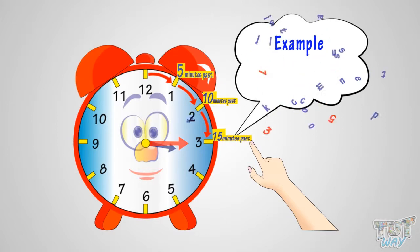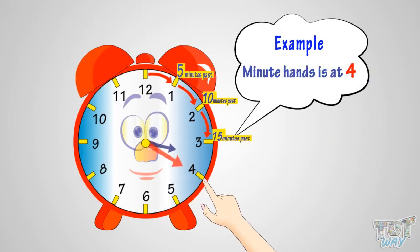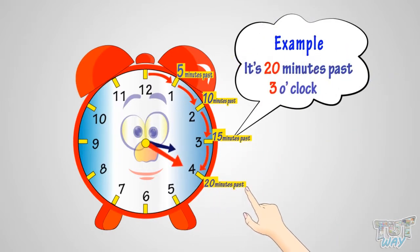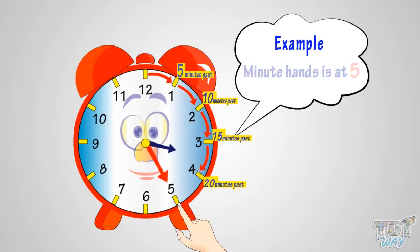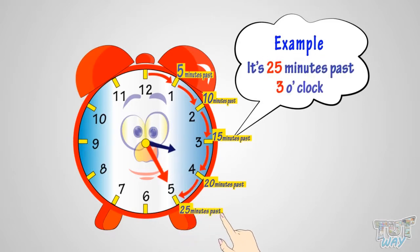Here the minute hand is at 4, so it's 20 minutes past 3 o'clock. Here the minute hand is at 5, so it's 25 minutes past 3 o'clock.